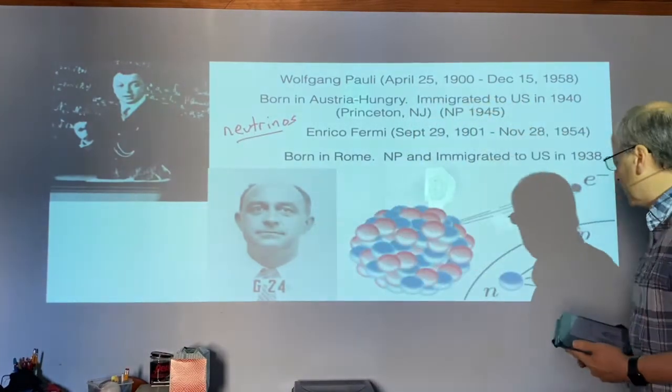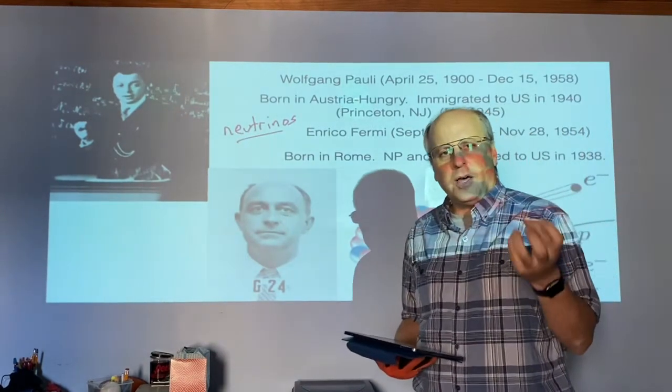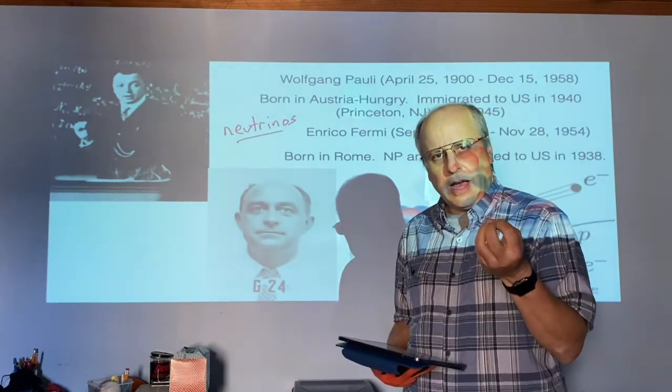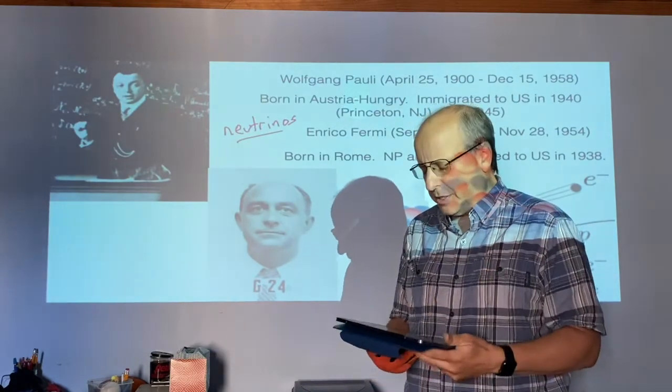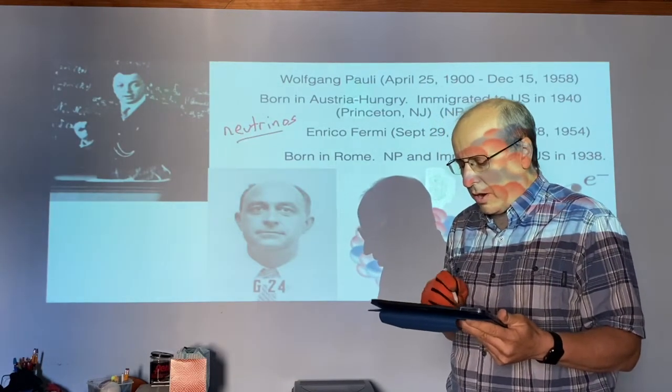What wasn't conserved was the spin. So they thought that there was some other particle that was carrying off some of the spin from the original substance. And that particle we call our neutrino.